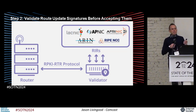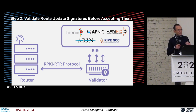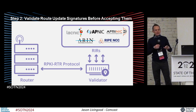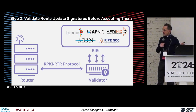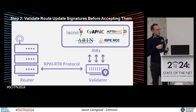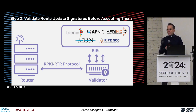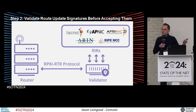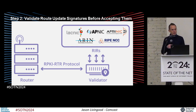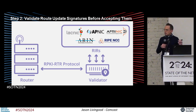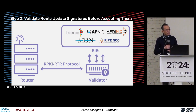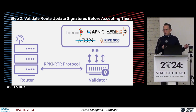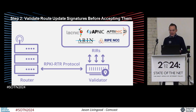Step two is making sure that signature is valid. If you're going to accept a routing update from Cloudflare, you should go check: is that update signed? Because I know Cloudflare signs their updates. If so, does that key match — does that signature validate? If not, ignore it. That way, if you're Cloudflare you've signed those addresses, and if you're Comcast you validate those addresses. There can't be any route hijacks that might try to reroute traffic from Cloudflare, Netflix, Google, Facebook, or your bank.